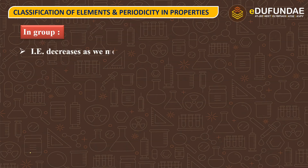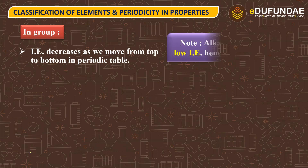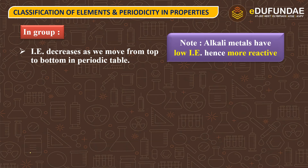Agar aap group mein baat kareenge, as you move down the group from top to bottom, the ionization energy decreases. Jaysay aapka group mein baat kareung, sabse extreme left per kawansa group present hai? Alkali metals. To unki ionization potential kya hai? Sabse kam hai — they are having the least ionization potential.